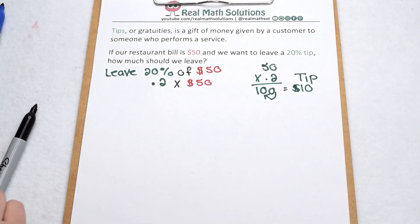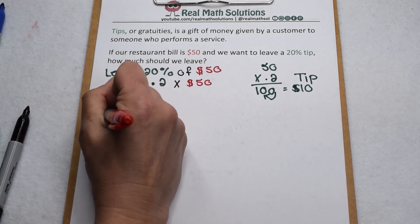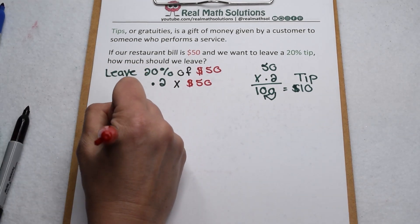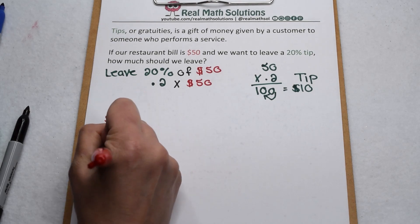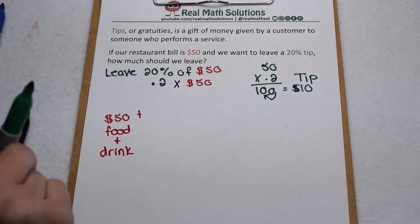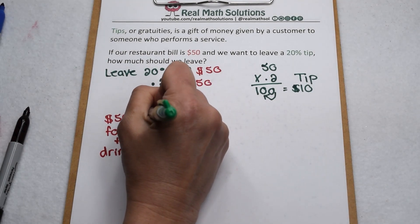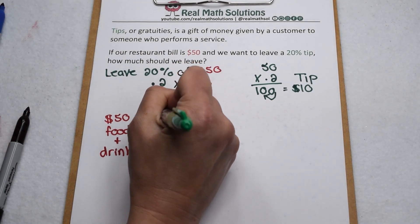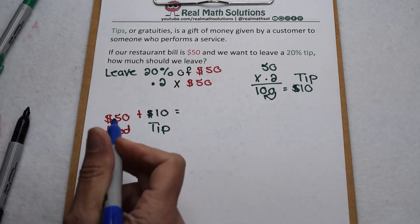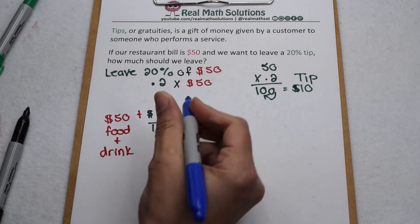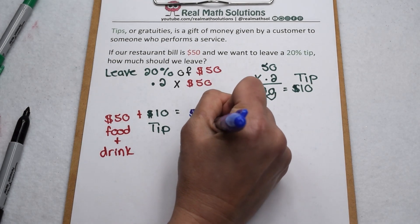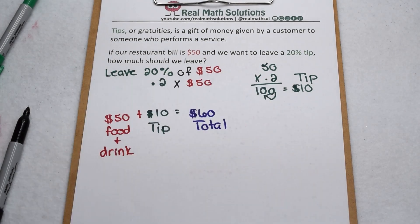So how much are we going to leave altogether? No matter what, we need to leave the $50 for our bill — that's our food and drink, and we have to pay for that. To that, we add our tip that represents thanking them for their service. So $50 for our food and drink, plus $10 for our tip, means we're going to leave a total of $60 for our server.